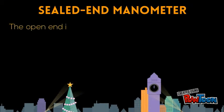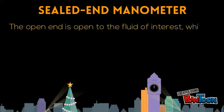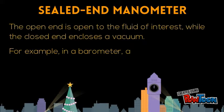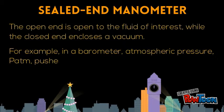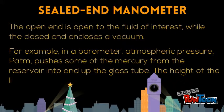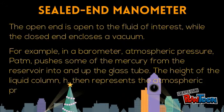In a sealed end manometer, the open end is exposed to the fluid of interest while the closed end encloses a vacuum. For example, in a barometer, atmospheric pressure pushes mercury from the reservoir up into the glass tube, and the height of the liquid column represents the atmospheric pressure.